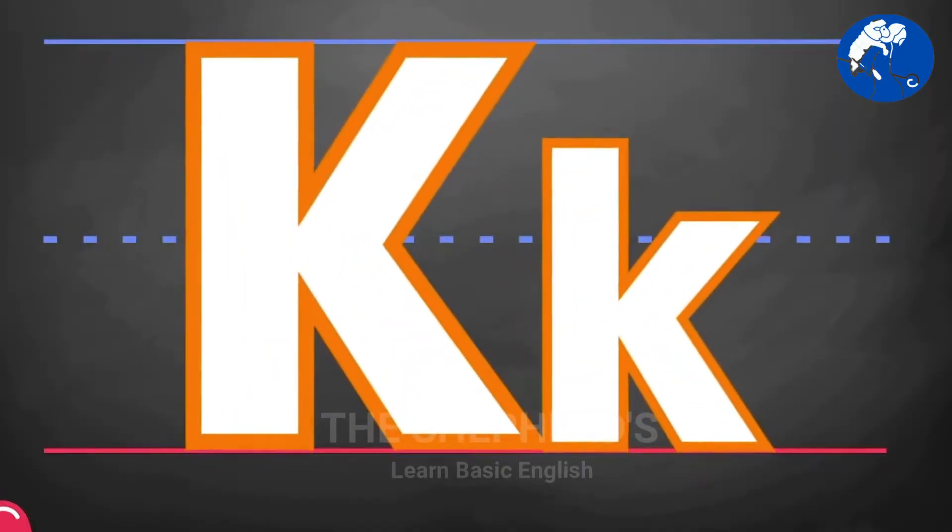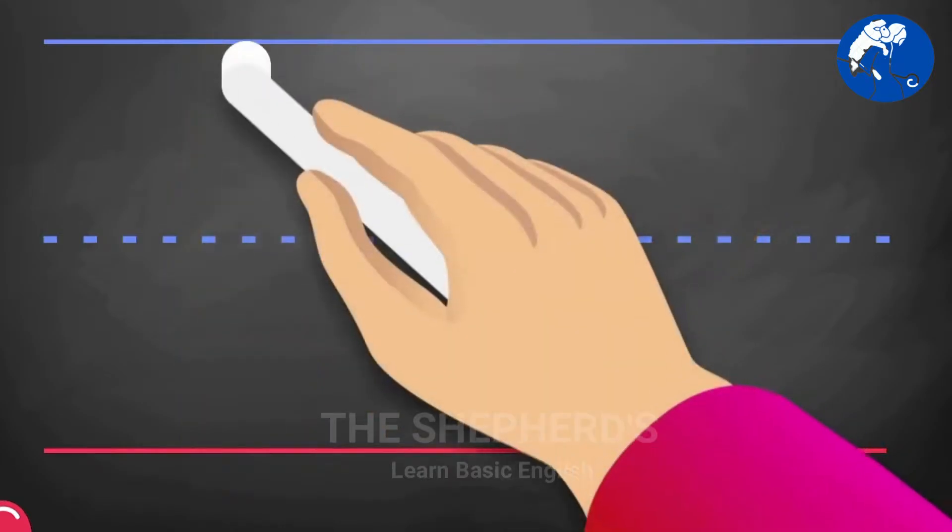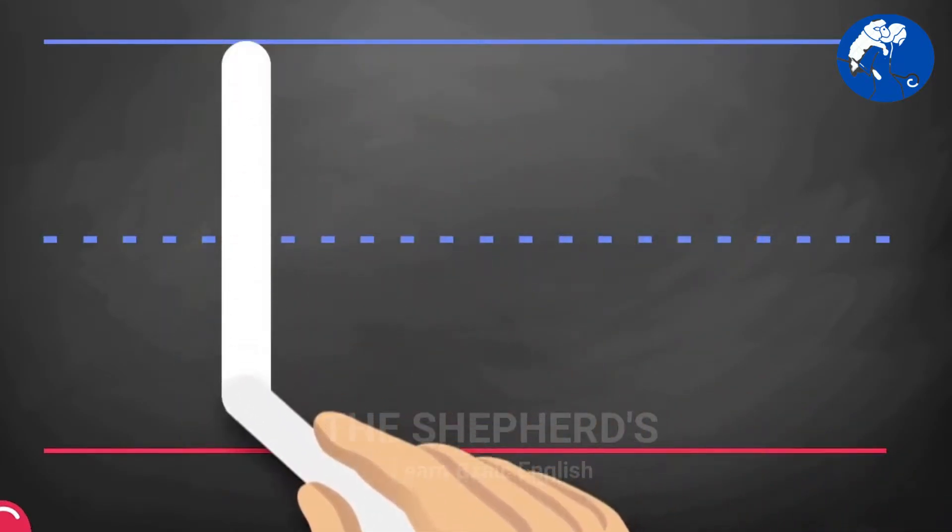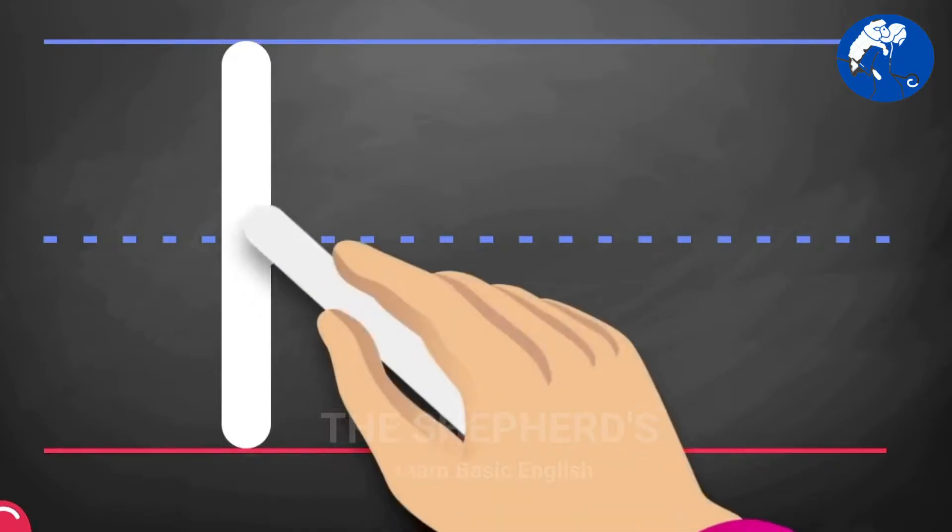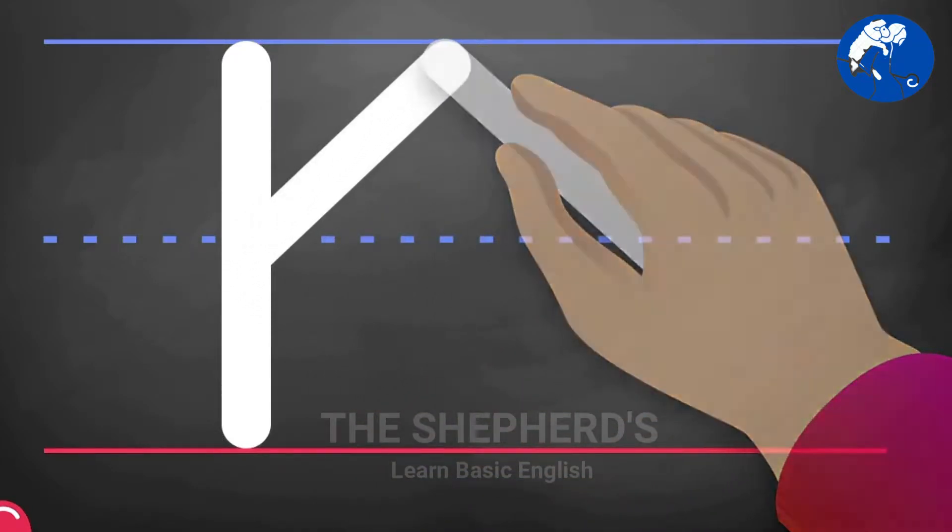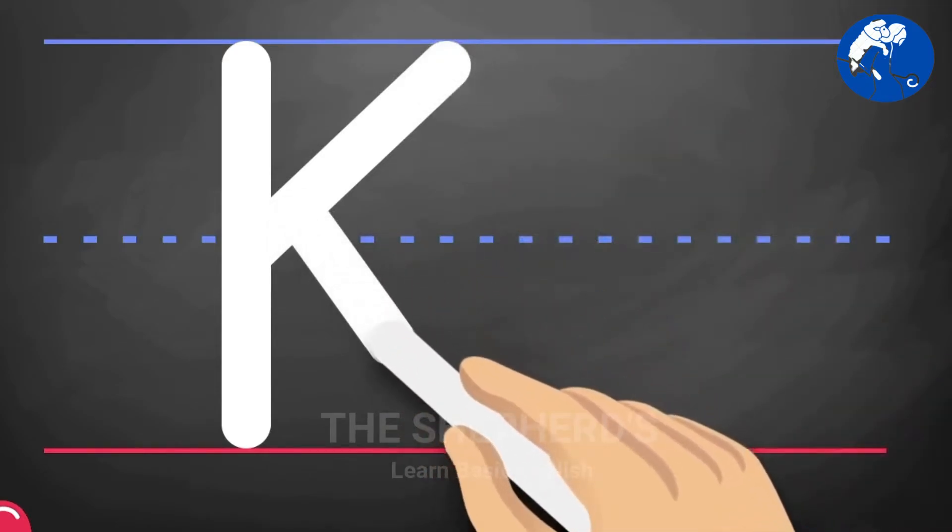Letter K. Uppercase K: From the top, pull down. Slant up and draw another diagonal line out.